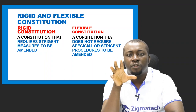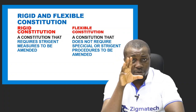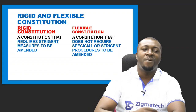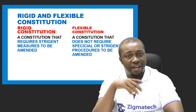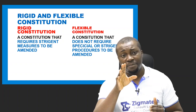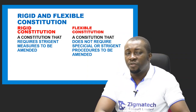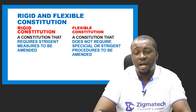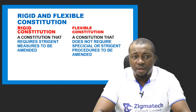Now constitutions based on amendment procedure. We have the rigid constitution — a type that requires difficult or stringent measures or processes before it can be amended. The constitution itself stipulates a difficult procedure for amendment. A rigid constitution is a written constitution and has all its features. Countries with rigid constitutions include Nigeria, United States, Canada, and India.